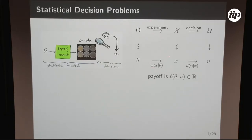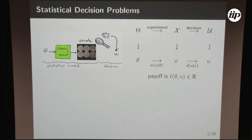The experiment is formally given as a conditional probability distribution — a family of distributions over the sample space labeled by the unknown parameter theta. Then there is the decision stage, where the statistician looks at the sample and concludes something. This is also given by a conditional probability distribution. At the end, the decision problem is defined by putting a payoff function that depends on the true but unknown value of theta and the action U chosen by the statistician. A positive value means a good decision; if negative, it means a bad decision and the statistician pays for the mistake.